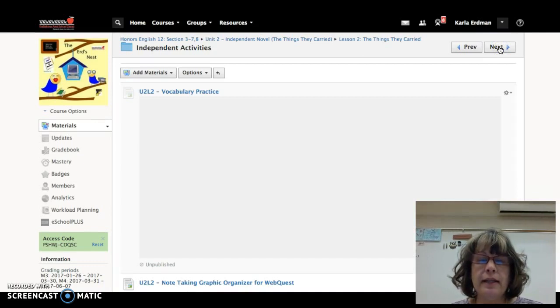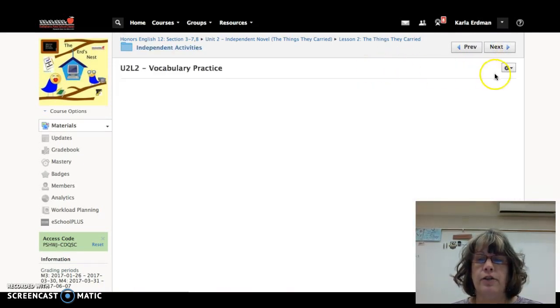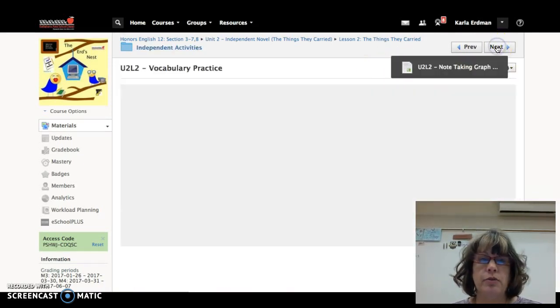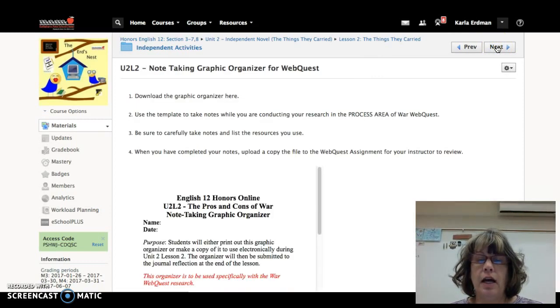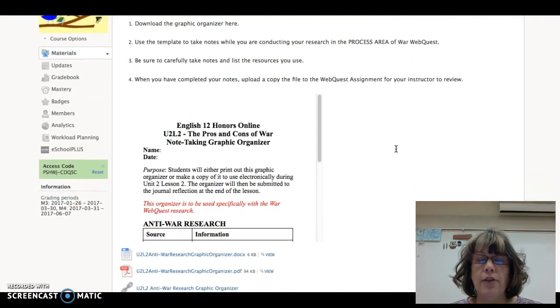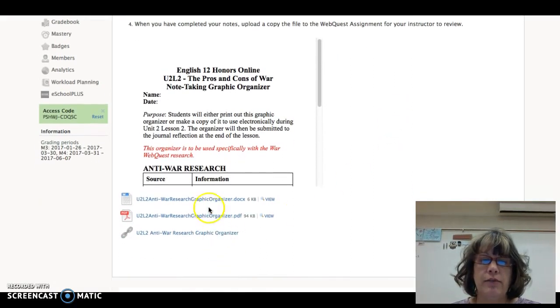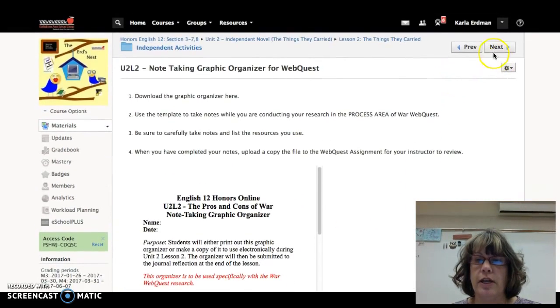On to the independent activities, you have your vocabulary practice like usual. After that you have a note-taking graphic organizer. You're still continuing on with the web quest, this time though you're focusing on the other side of war research, anti-war, and again you have the links for the graphic organizer there.